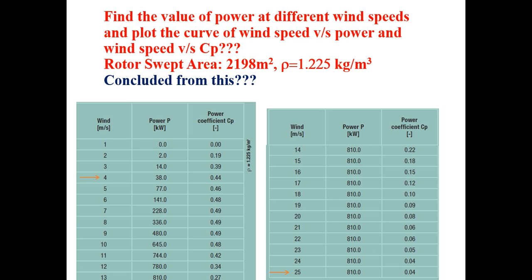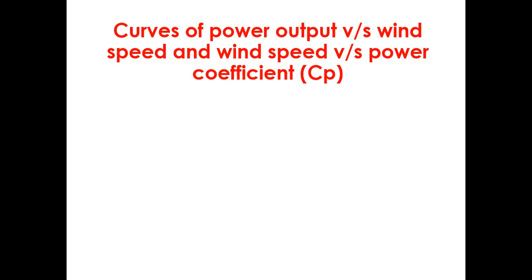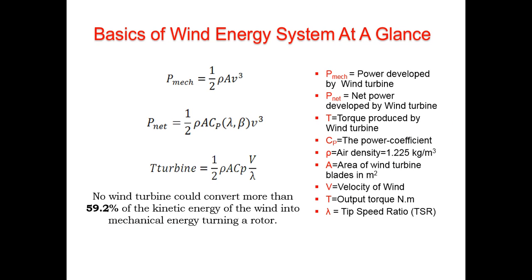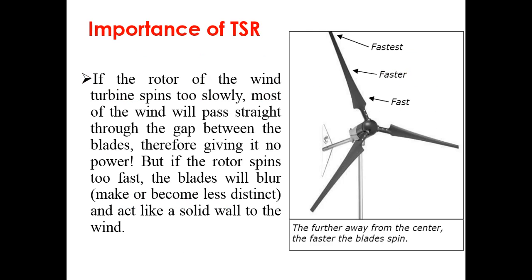A design example is taken from the Energon company data sheet, available online. We need to find the value of power at different wind speeds and plot wind speed versus power and wind speed versus Cp. The rotor swept area is 2,198 m² and air density rho is 1.225 kg/m³. The equation used is P_net = one-half × rho × A × Cp × v-cubed.